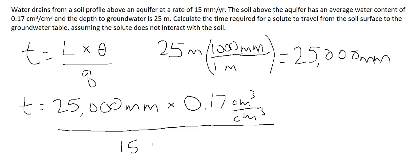Now you can plug these values into your calculator and you should get a value of 283.3 repeating years. Or, because there are only two significant figures in our problem statement, the final answer should be rounded to 280 years.